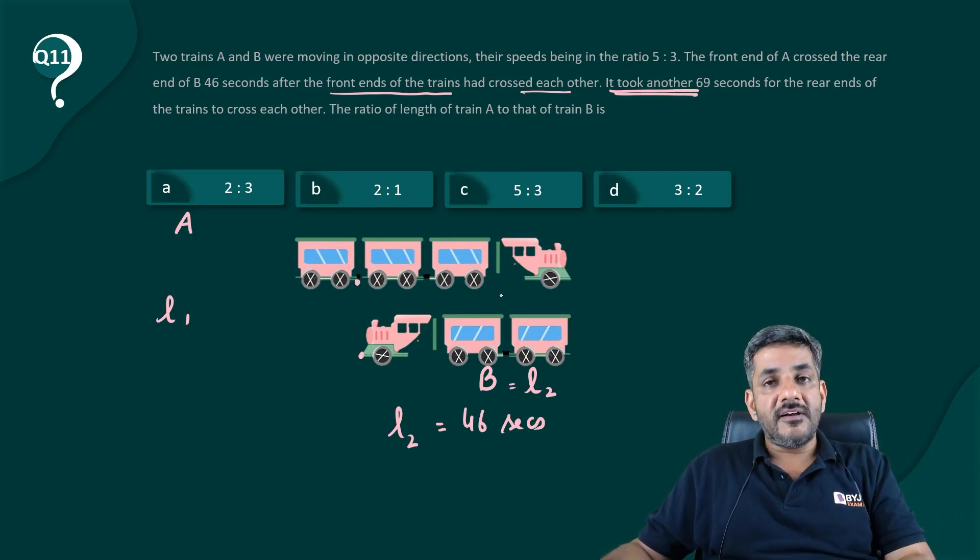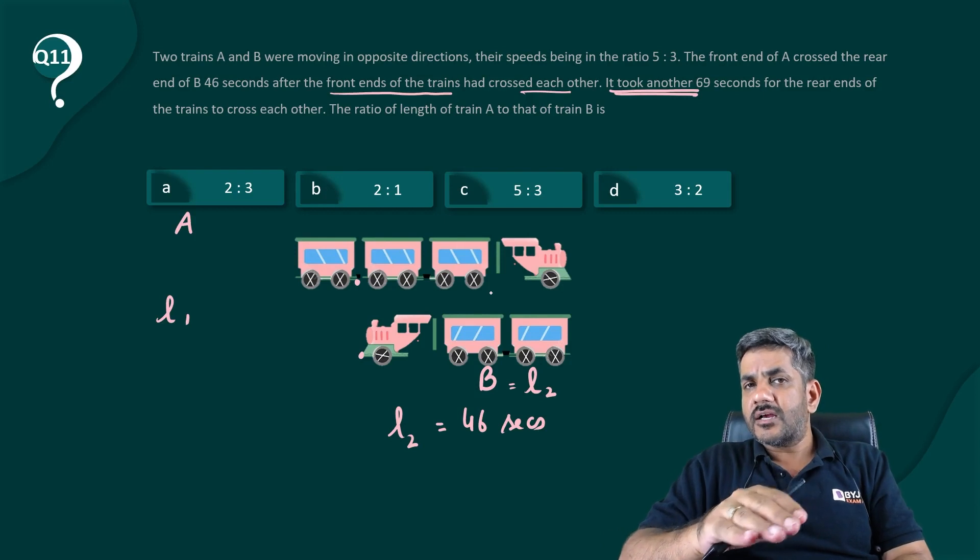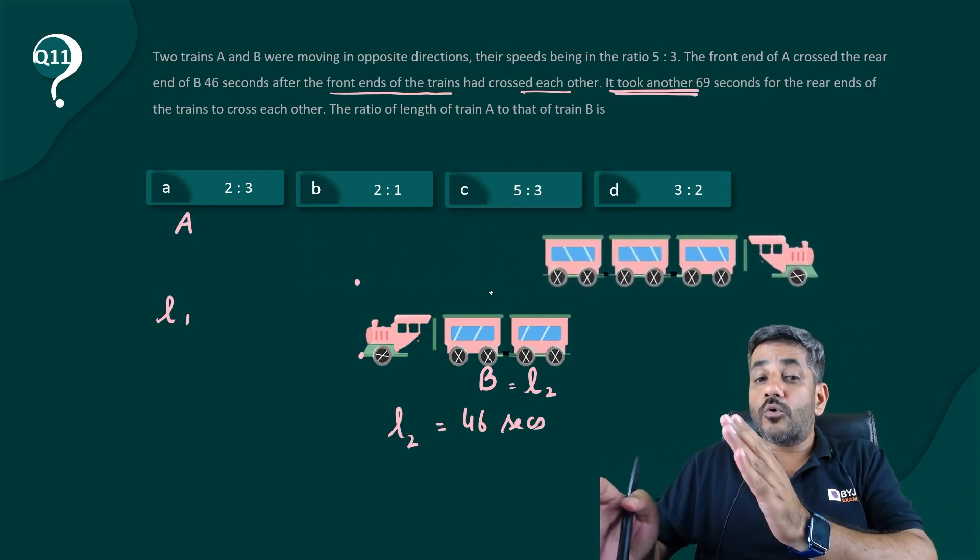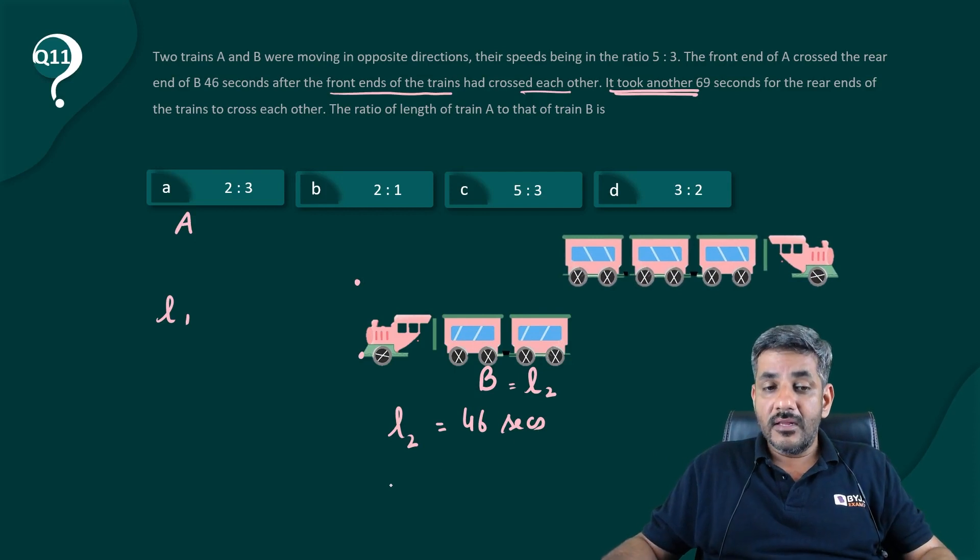So from this point, when this train moves, just look at this picture again very closely. So can I say that train is covering its own length of L1 now? And this it is covering in 69 seconds.